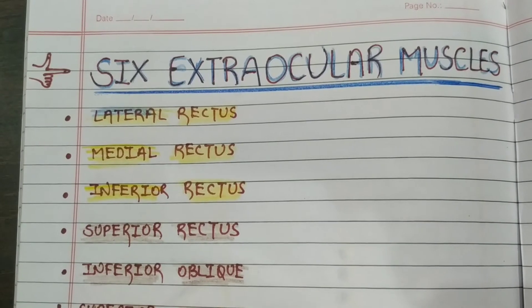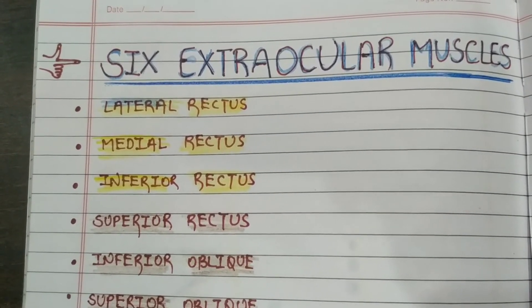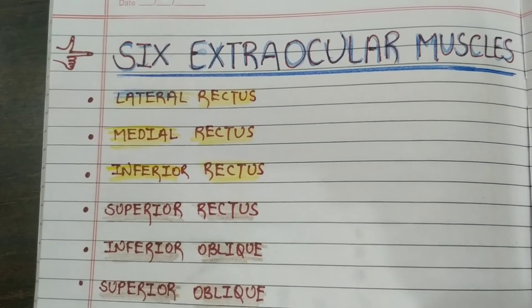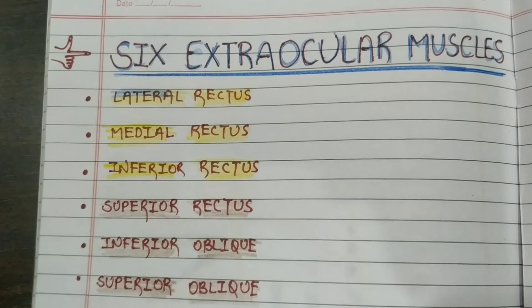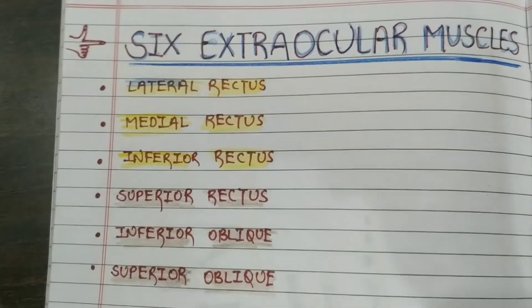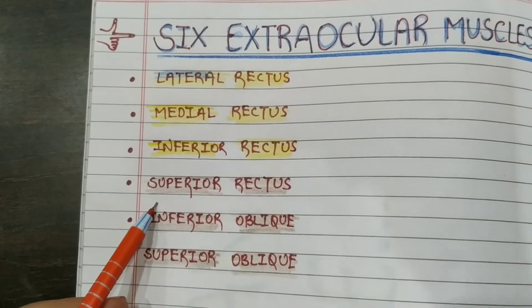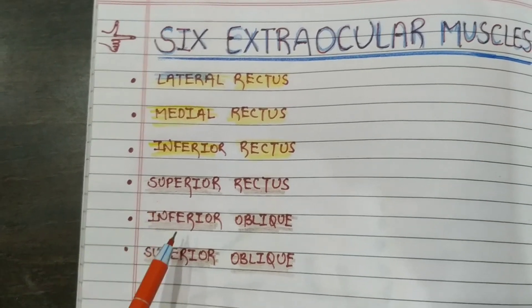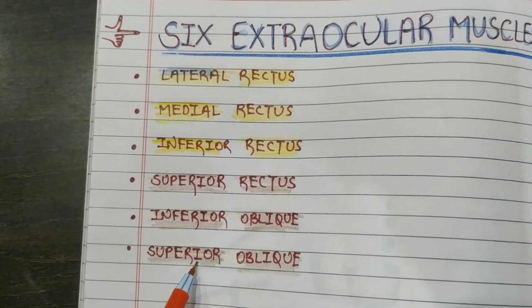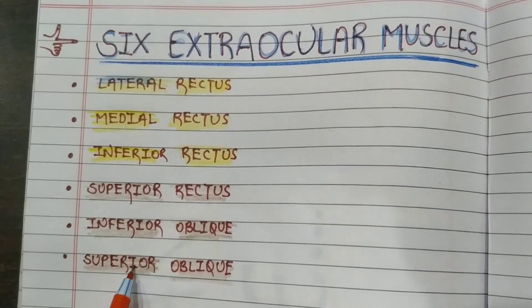There are six extraocular muscles which are responsible for the movement of the eye, or the rapid eye movement during dreaming. The muscles are: lateral rectus, medial rectus, inferior rectus, superior rectus, inferior oblique, and superior oblique. These are the six extraocular muscles responsible for eye movement.